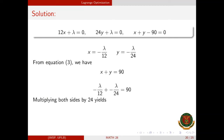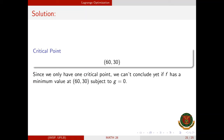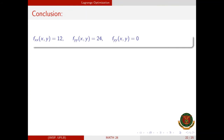Multiplying both sides by 24 yields λ = −720. Going back to the values of x and y in terms of λ, we get x = 60 and y = 30. There is only one critical point: (60, 30). Since we only have one critical point, we cannot yet conclude whether F has a minimum at (60, 30) subject to the constraint g = 0, so we compare with other function values.